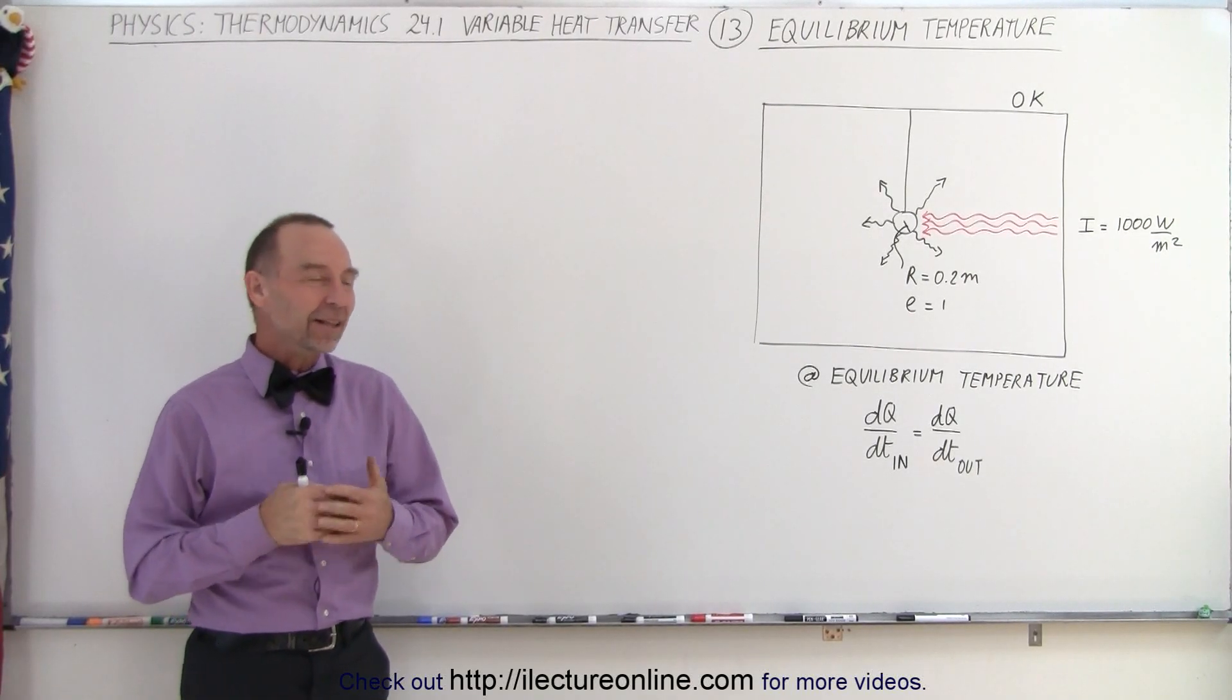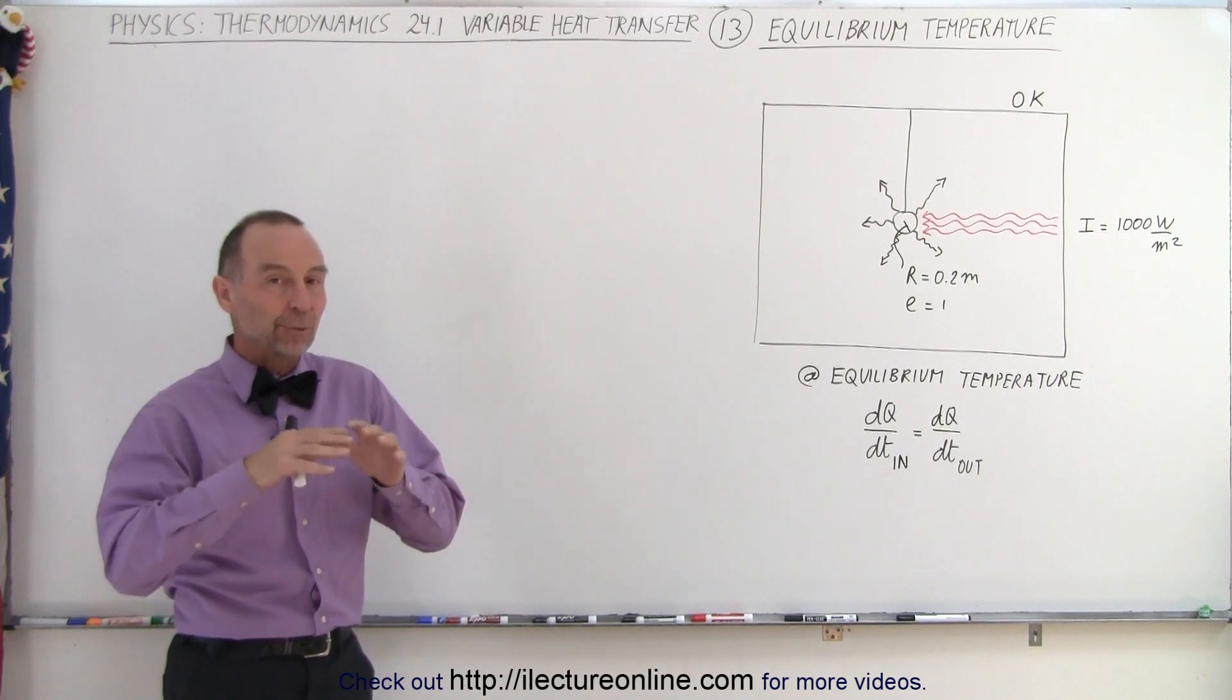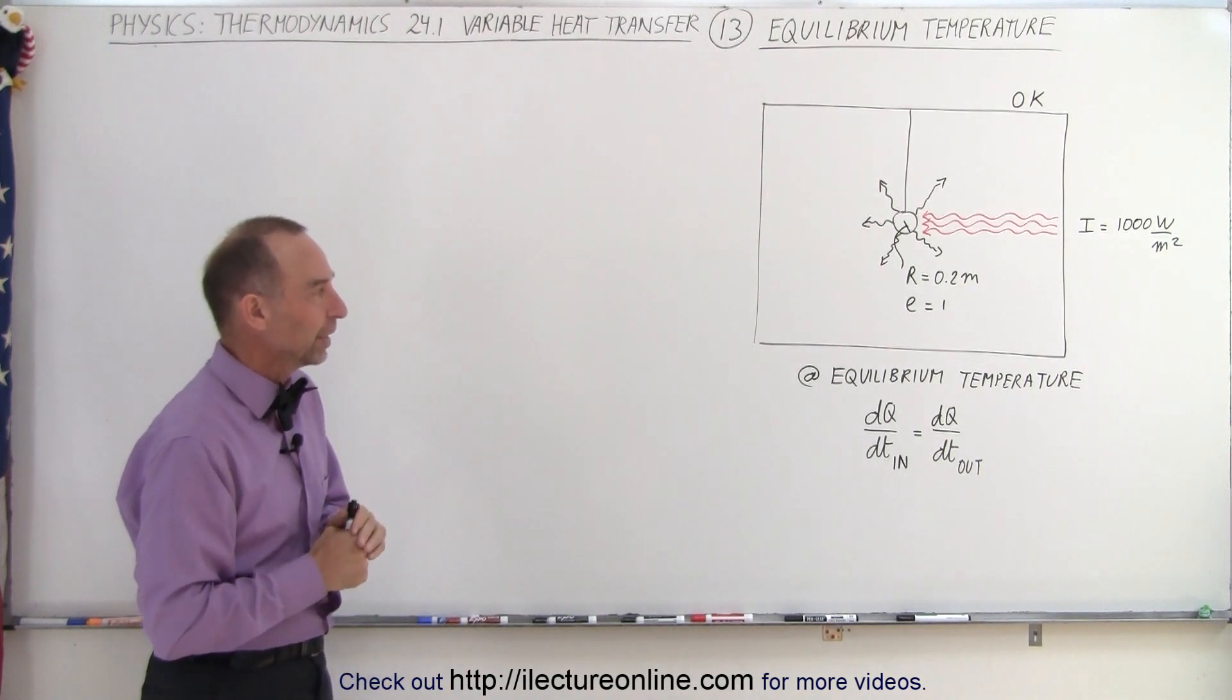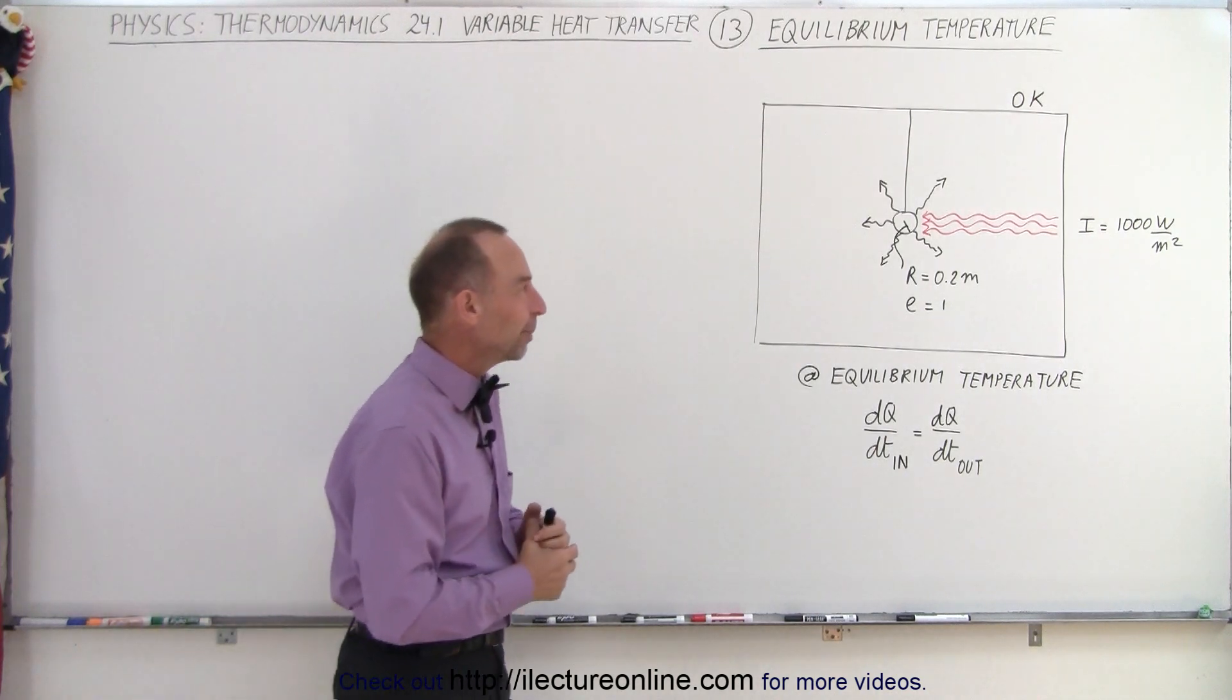Welcome to Electron Line. Now let's look at what we call the equilibrium temperature of an object that's being radiated from one direction. This is very applicable to planets and moons and things like that in space.